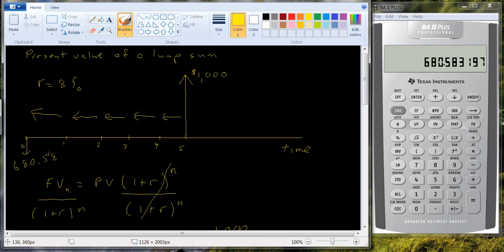That means if you paid six hundred and eighty dollars and fifty eight cents and you earned eight percent, in five years you'll have a thousand dollars in your account. And present value is a very valuable tool because we'll use this all the time. We'll ask ourselves, what would you be willing to pay for a thousand dollars received five years from now if you want an eight percent return? Well, we just answered that. Six eighty fifty eight.